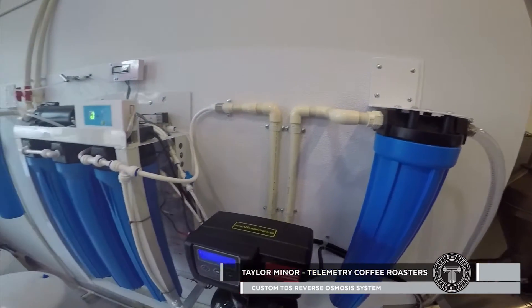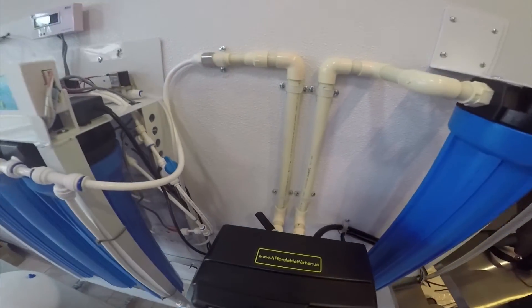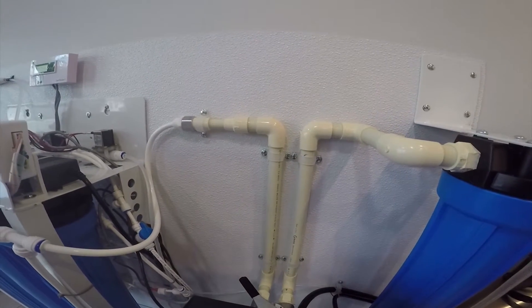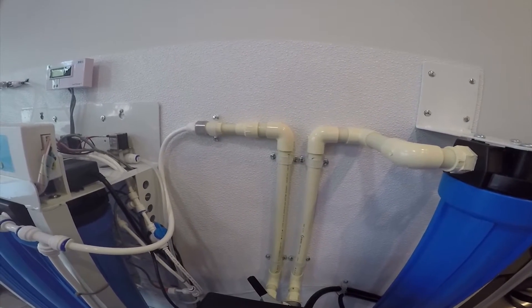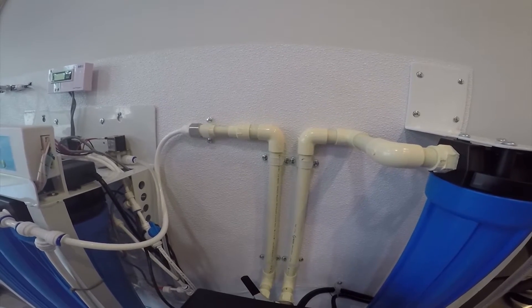And then our softener here, if you look at it, we kind of half soften it because the water coming in is too hard and can damage the membranes of the RO, but we don't want to soften it all the way because we still want some of that calcium.